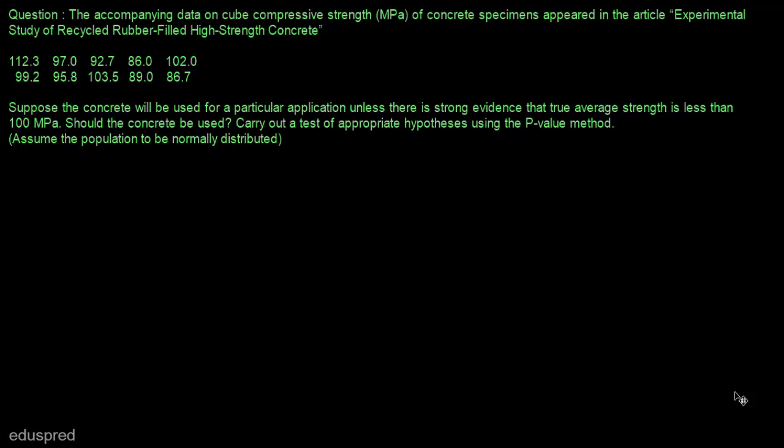Let's get started with this question. The accompanying data on cube compressive strength of concrete specimens appeared in this article. Suppose the concrete will be used for a particular application unless there is strong evidence that the true average strength is less than 100. Should the concrete be used? Carry out a test of the appropriate hypothesis using the p-value method. We have to assume that the population is normally distributed.